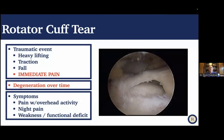A rotator cuff tear can be a traumatic event from heavy lifting, traction, or a fall directly on the shoulder, causing immediate pain. Patients sometimes can't lift their arm at all. But it's actually more common to see patients who develop rotator cuff tears through degeneration over time — without any inciting injury — and develop either worsening pain or weakness. Symptoms include pain with overhead activity, pain at night, and weakness or functional deficit on exam.